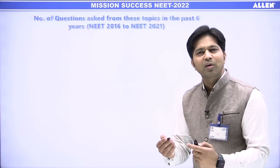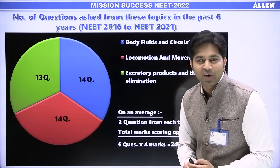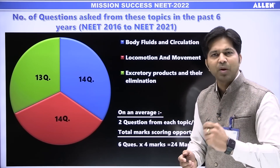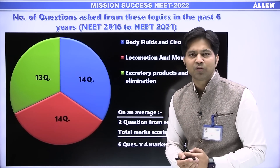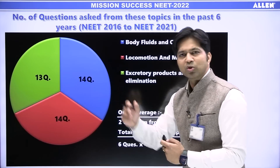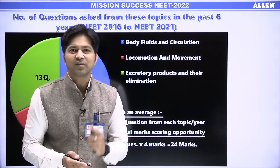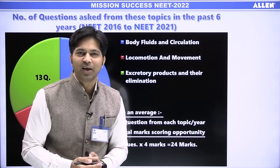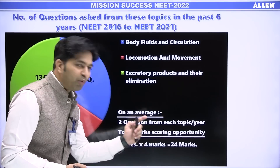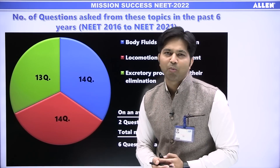Let me first clear the confusion about the NEET exam weightage of these topics. From a simple pie chart representing the last 6 years — NEET 2016 to NEET 2021 — a total of 9 papers were held. Body Fluids and Circulation contributed 14 questions, Excretory Products and Their Elimination contributed 13 questions, and Locomotion and Movement contributed 14 questions. On average, 1 to mostly 2 questions are asked per topic per year. Combined, the total marks scoring opportunity comes to 24 marks. For the target of 360 out of 360, this is a golden opportunity.